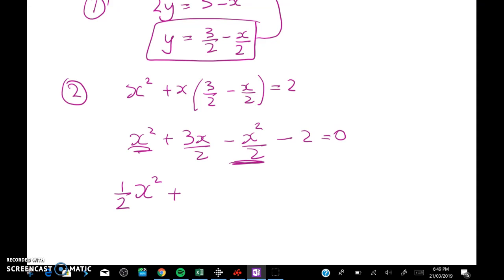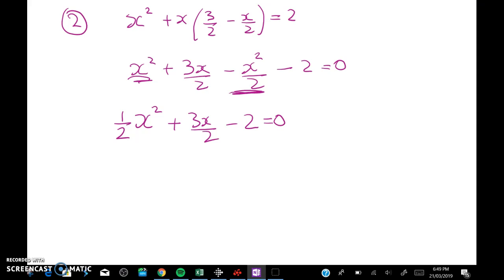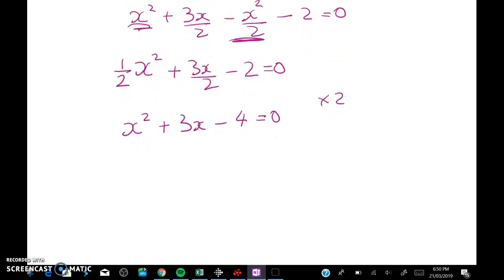That gives me x squared, so I've got x squared here minus a half x squared here. So that gives me one half x squared plus 3x over 2 minus 2 equals 0. But I really don't like fractions even though I'm a maths teacher so I'm going to times everything through by 2. That leaves me with x squared plus 3x take away 4 equals 0. So finally it's collapsing into a really easy little quadratic. And we get (x + 4) times (x - 1). There are two solutions here either x equals negative 4 or x equals 1.